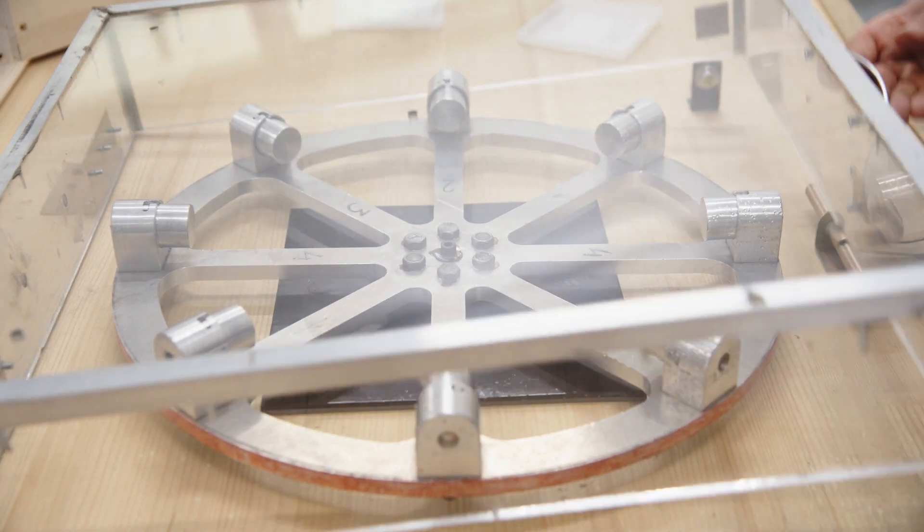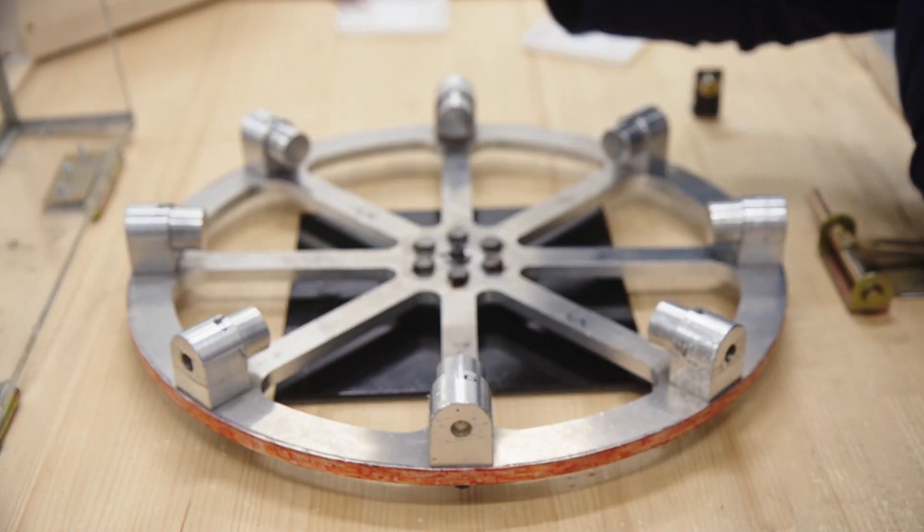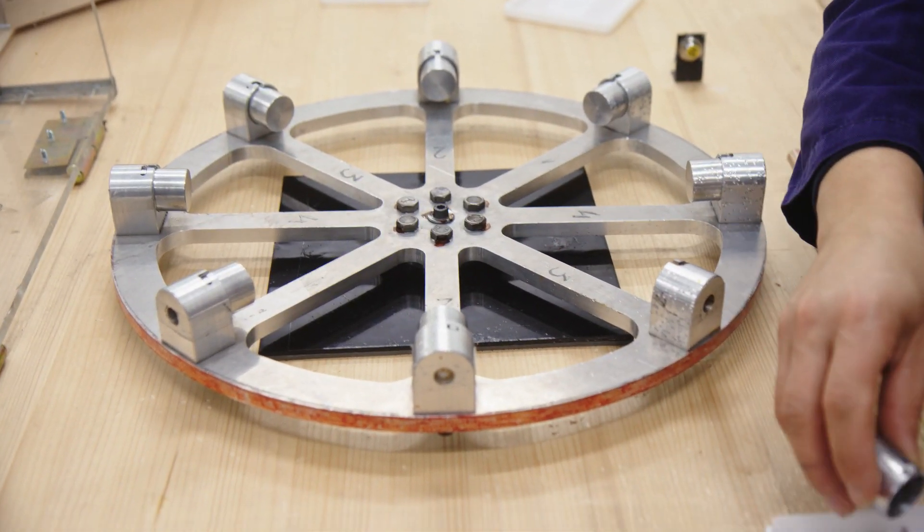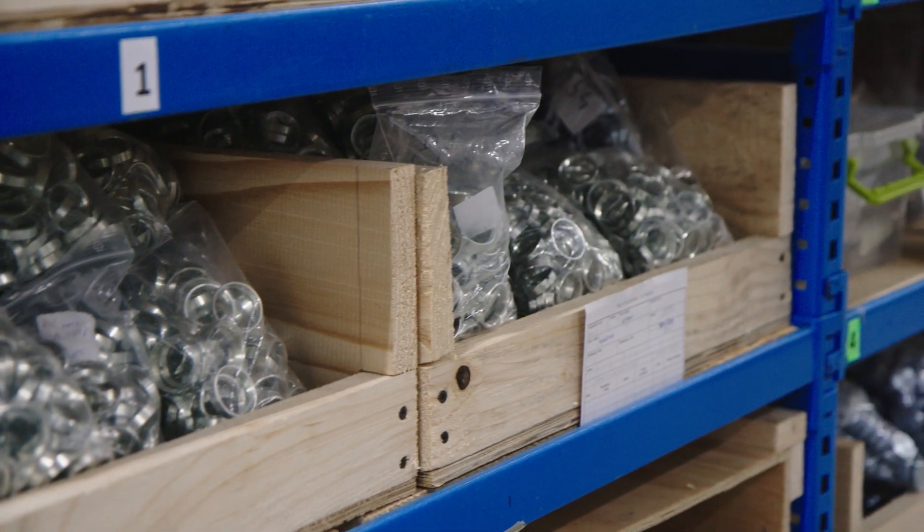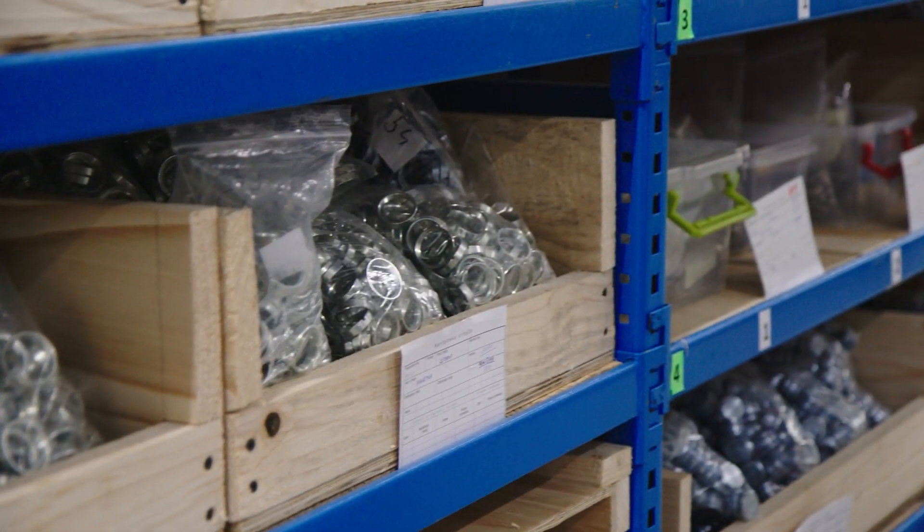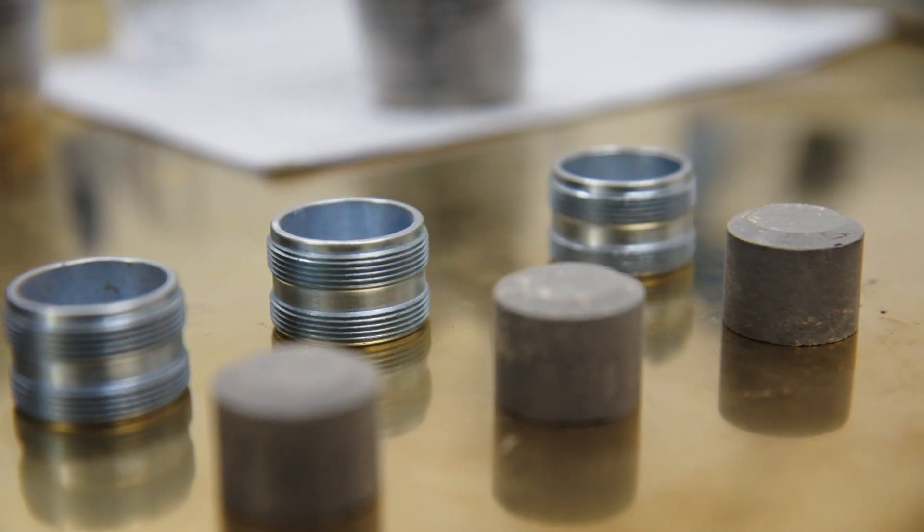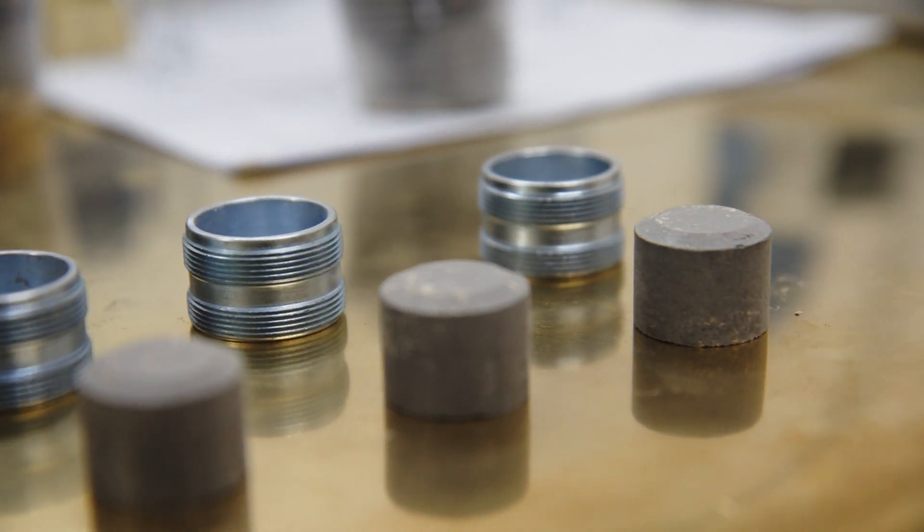The fuses we produce are categorized according to two categories: activation mechanism and munition type. In accordance with activation mechanism, they are classified as time, impact, proximity, or barometric mechanisms.